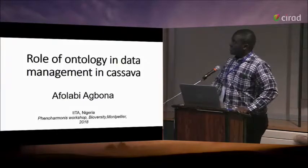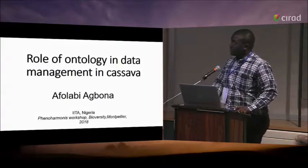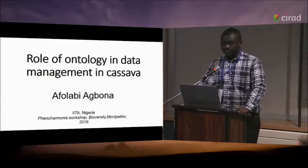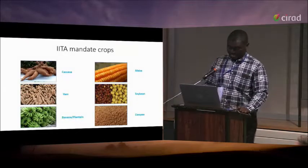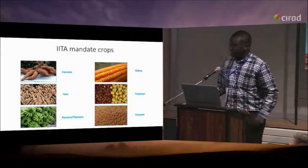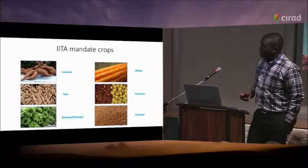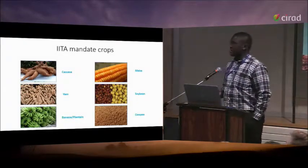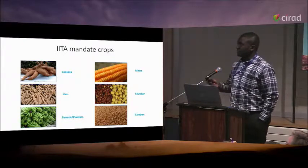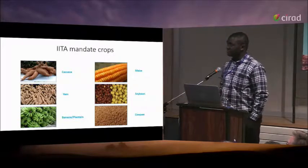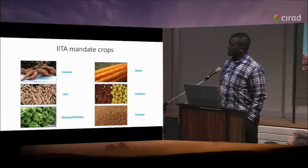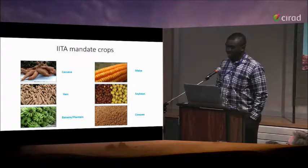I'll be talking about the role of ontology in data management in cassava. Our IITA mandate crops — we have six mandate crops at IITA, with cassava being one of them: yam, maize, soybean, cowpea, and banana.